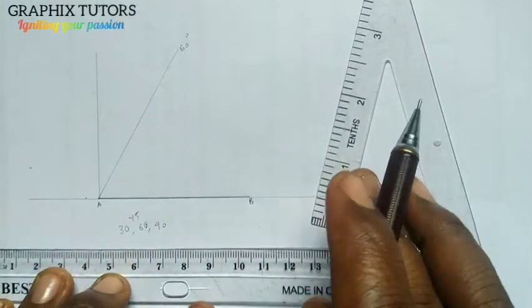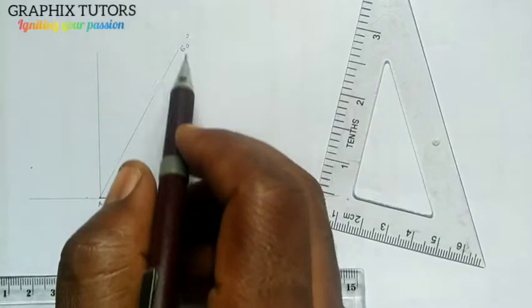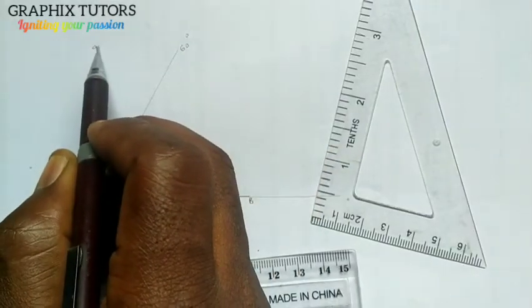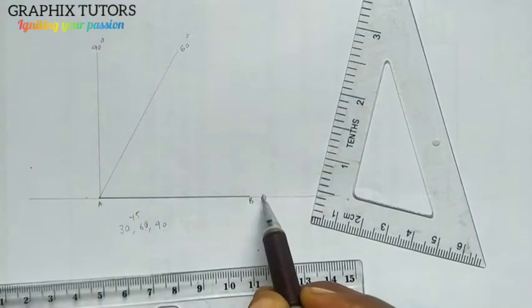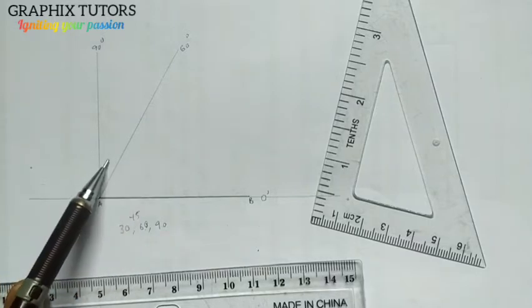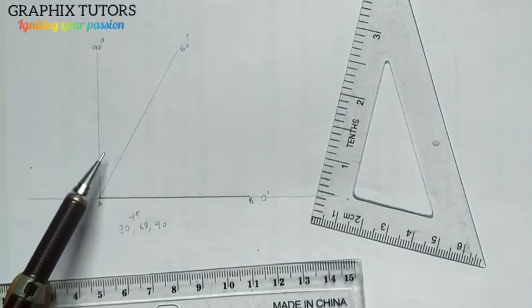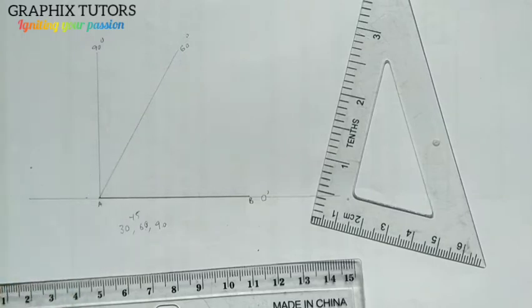Now that means I've constructed the two sides between which my angle falls: 60 and 90 degrees. This is the base here which is zero degrees, so we're going anticlockwise. We know very well that the angle between 60 and 90 is 30.